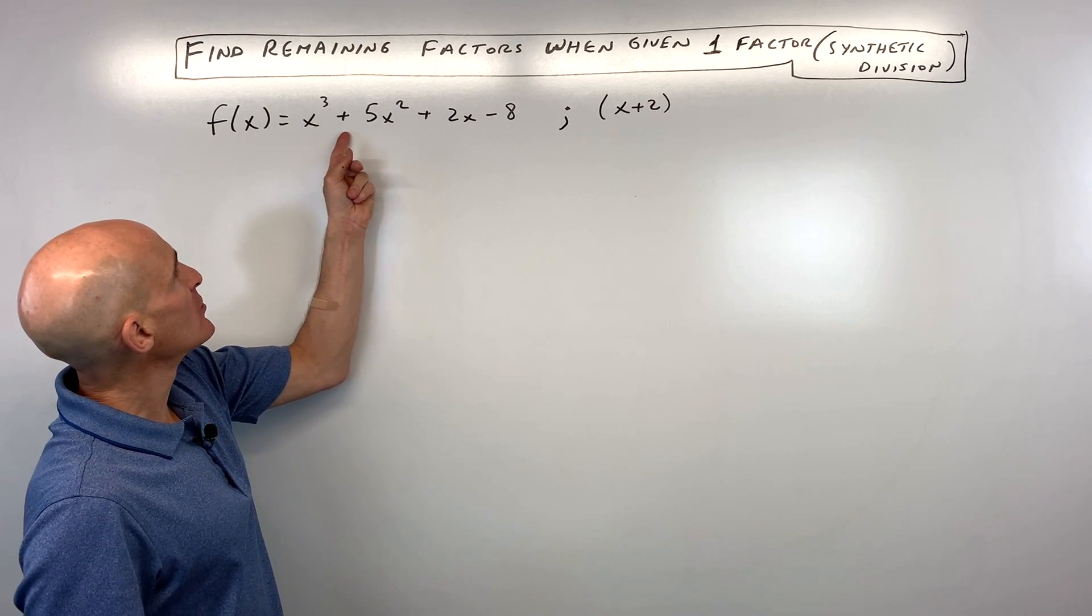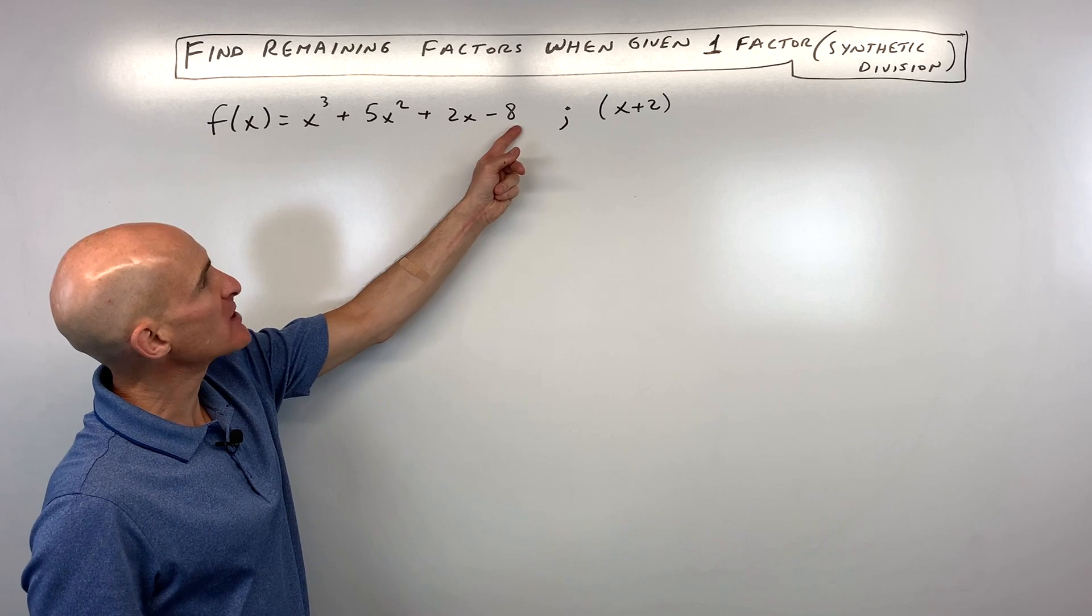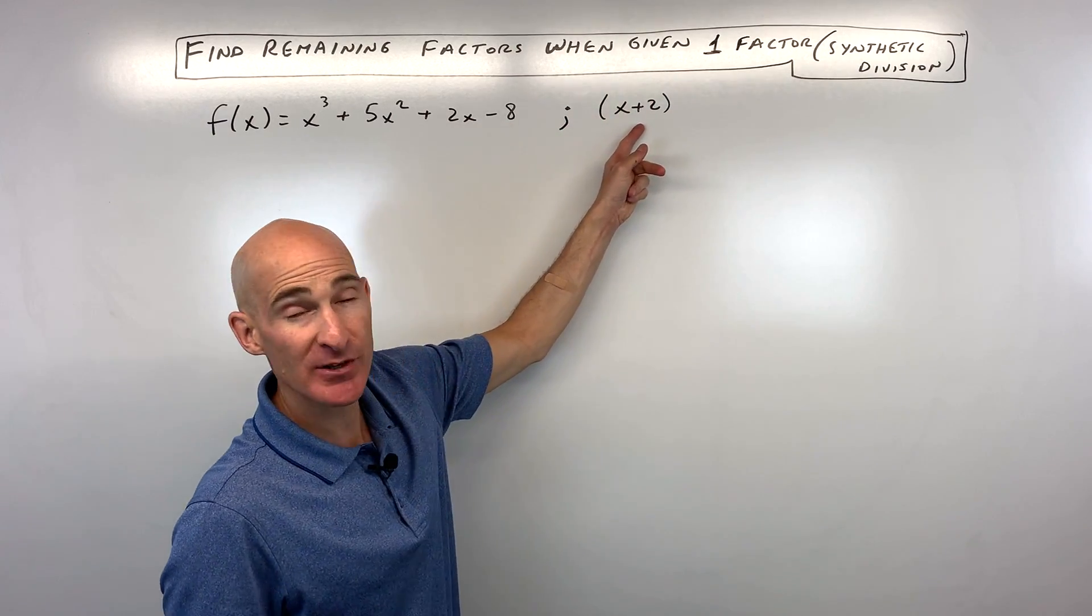We've got f(x) = x³ + 5x² + 2x - 8, and they're telling us that x + 2 is a factor.